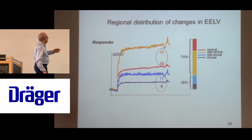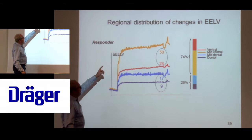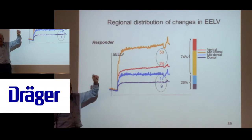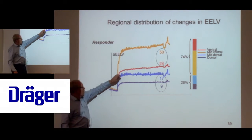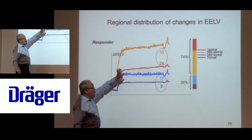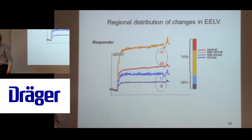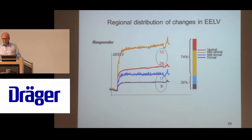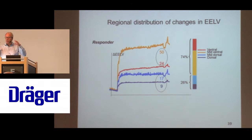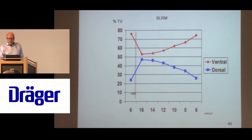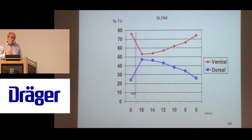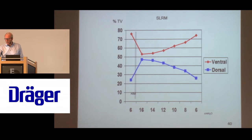The regional distribution of end-expiratory gas goes to the upper part of the lung - 74% of the end-expiratory lung volume increase goes to the top, and then the rest goes downstairs. So when you do a PEEP increase, you inflate the top of the lung, and by that you move the tidal volume downstairs.